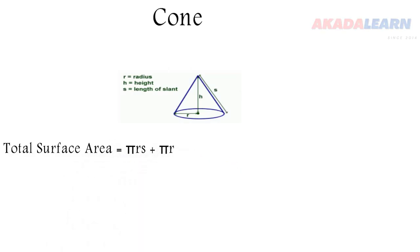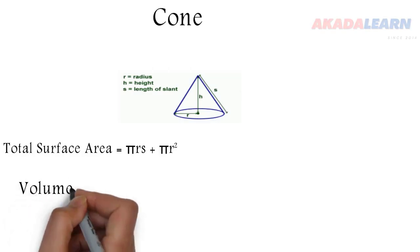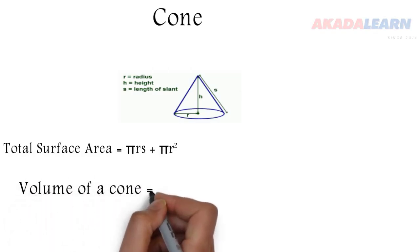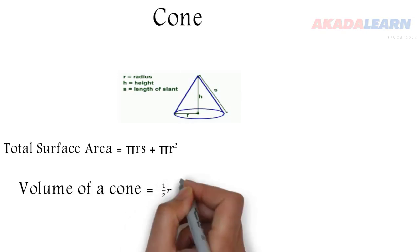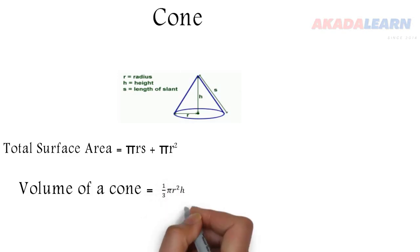The surface area is given by πrs + πr², while the volume of a cone is given by πr²h divided by 3. Let's see an example.